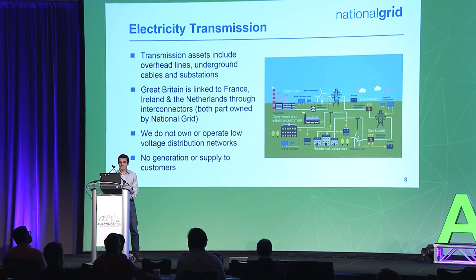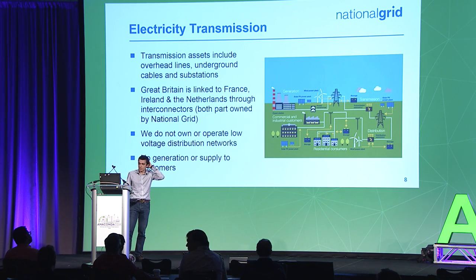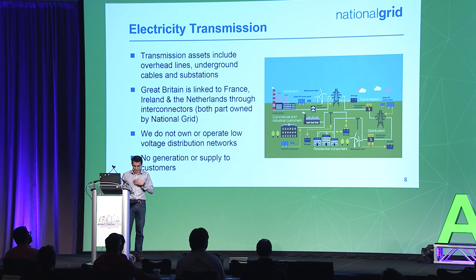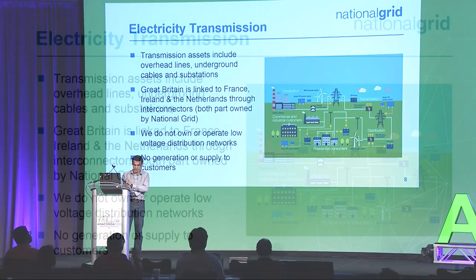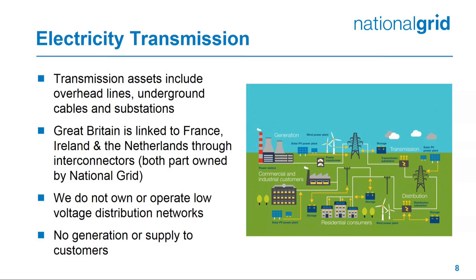Electricity transmission typical assets include overhead lines, underground cables, and substations. Our high-voltage networks run at 400,000 volts and 275,000 volts. Great Britain is linked to France, Ireland, and the Netherlands through interconnectors, with two more planned to Belgium and Norway, each about a gigawatt. We don't operate low-voltage distribution networks and we don't have any generation, nor do we supply directly to customers — though the US business does.